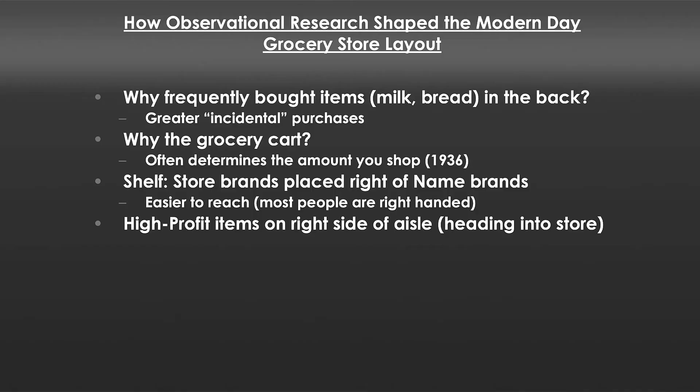Why are high-profit items on the right side of an aisle as you go into the grocery store? It has nothing to do with handedness. In the US, we walk and drive on the right side of the street. If you're going into the store, you're more likely to have more space in your shopping cart, so if you're going to grab an incidental item, you'll grab one that is a higher-margin item. The opposite should be true in the UK, where you drive on the left side of the street. It's a small effect, but it could actually increase margin for a grocer — and remember, this is essentially a costless decision. If you can increase margin ever so slightly by putting it on the right, you do it.